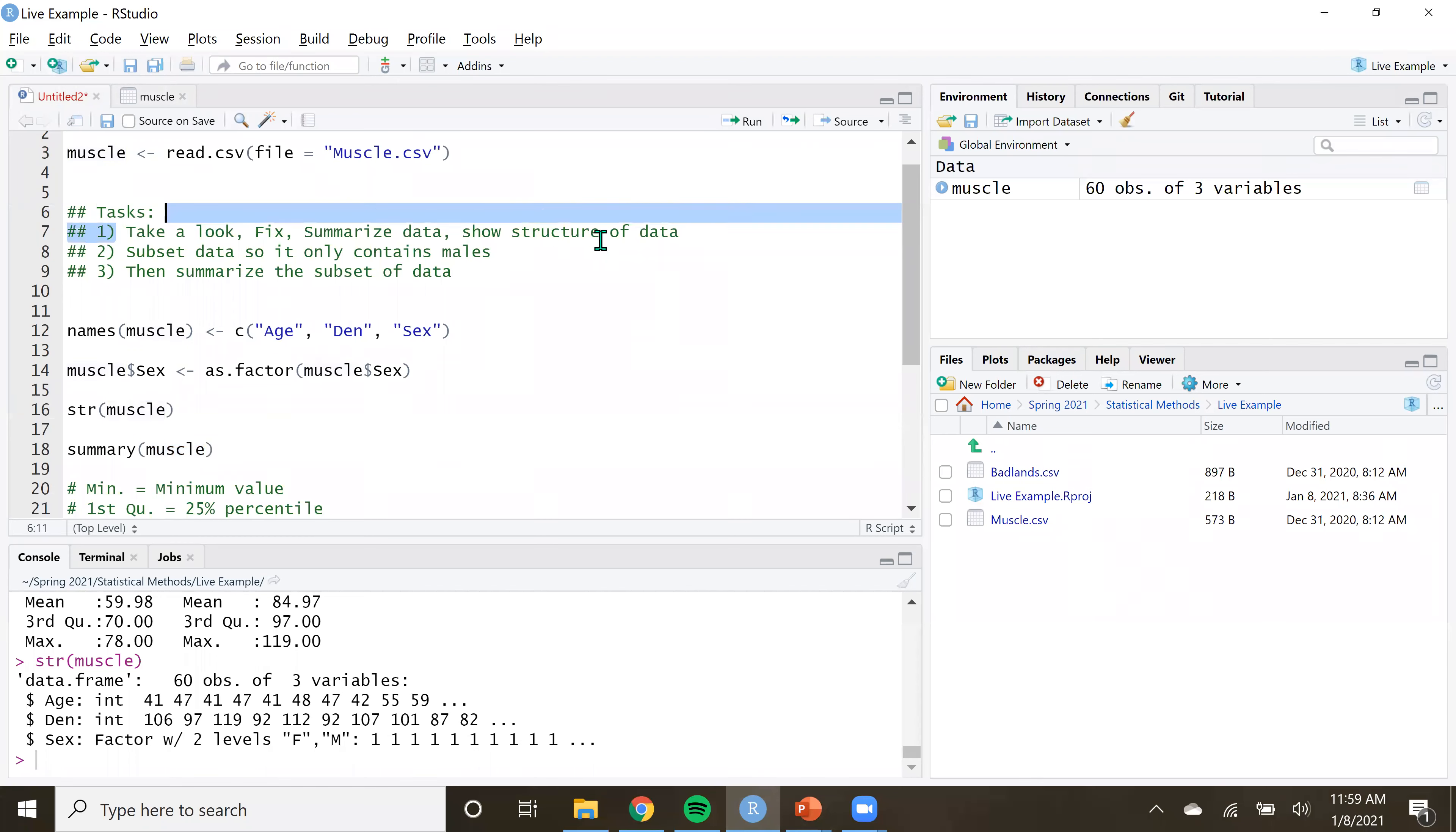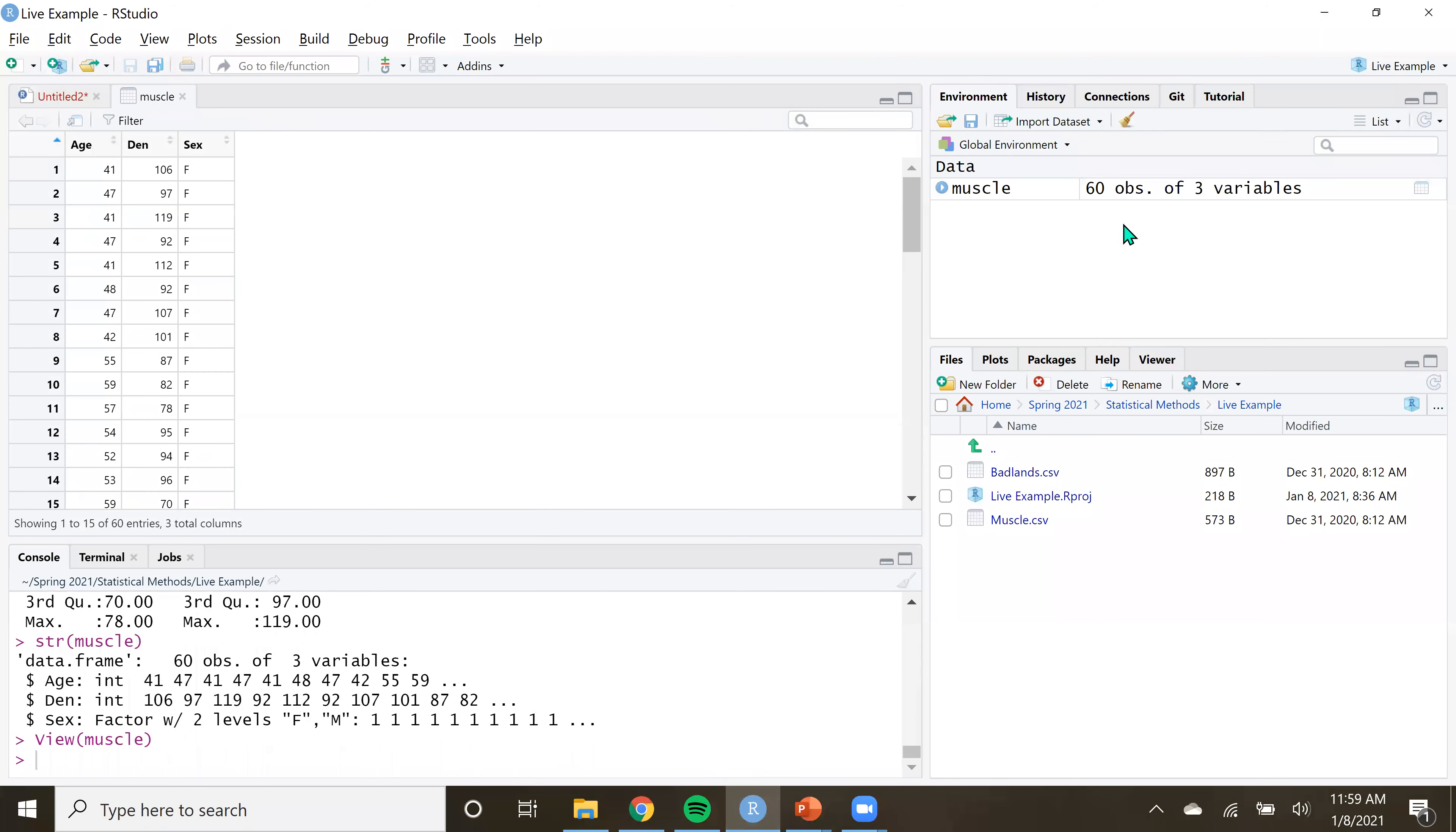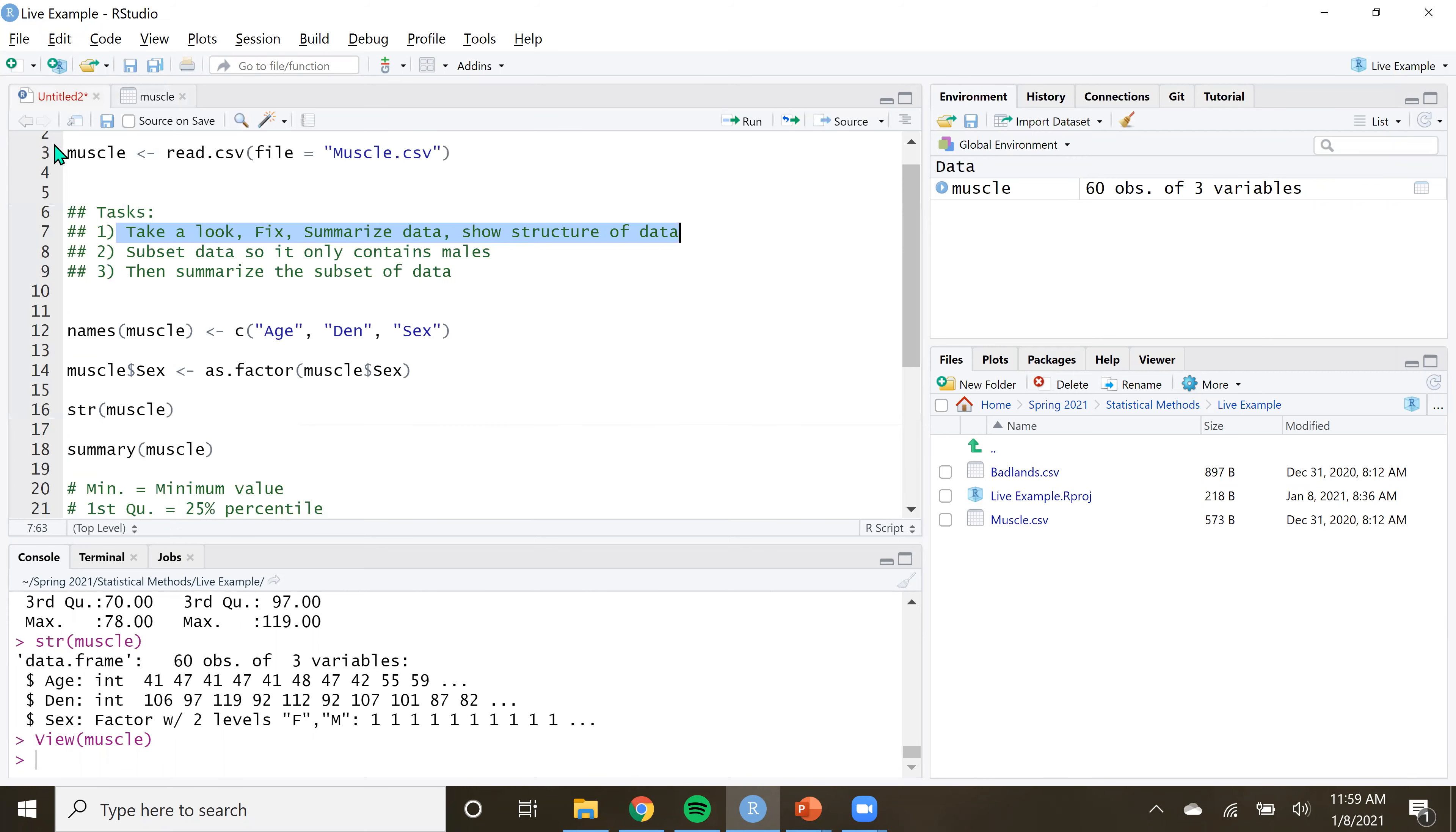We kind of took care of this first task here. We took a look at the data. You can just do that by clicking on the thing in the environment, it shows up just like that, easy enough. And then we fixed it by renaming the columns by using this names in conjunction with the C and then specifying the actual names of the columns. Very easy.